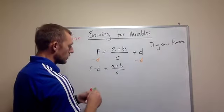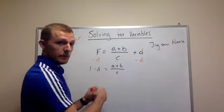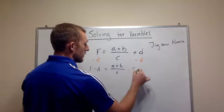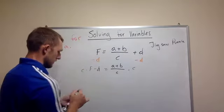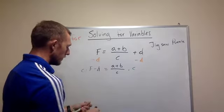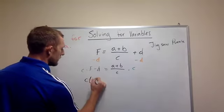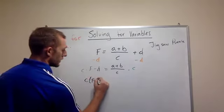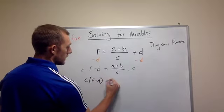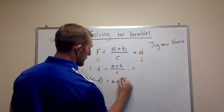So we need to get rid of the C. In the denominator, I have to multiply times C. Multiply times C. Which comes out to be C. Remember, it's multiplied times the whole side. Equals A plus B.